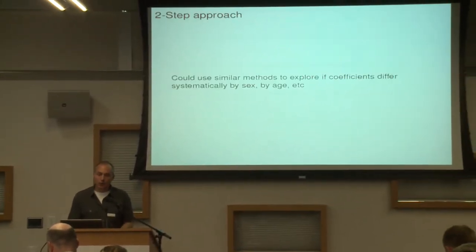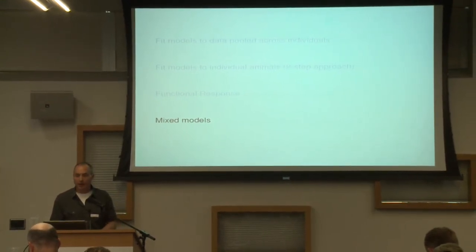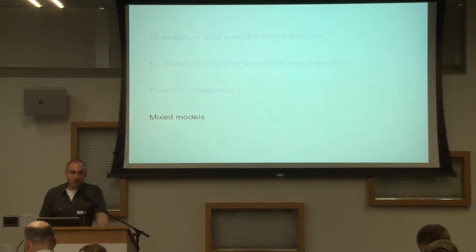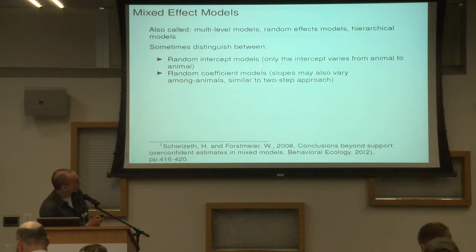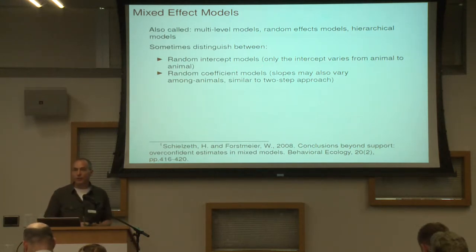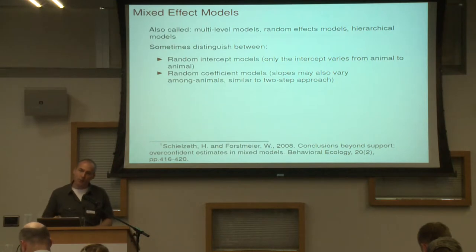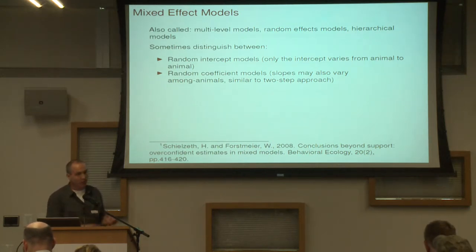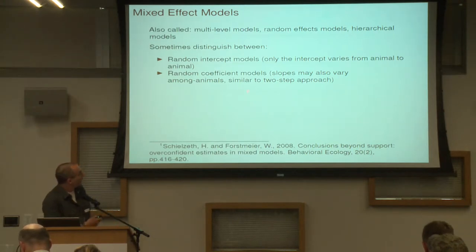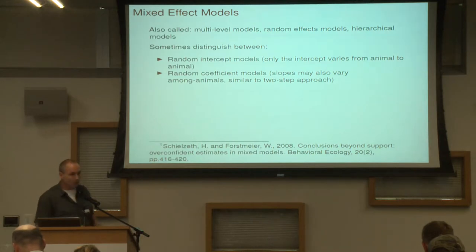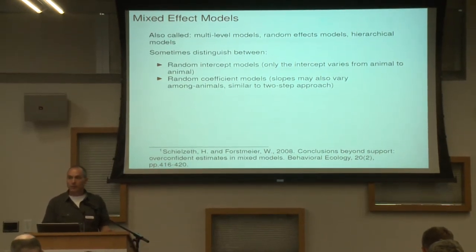The last part is mixed models. If you do this two-step approach, someone might say you should fit a mixed effect model. And if you look at the literature, there are tons of people fitting mixed effect models to study habitat selection. Most of them will fit what I would call just a random intercept only model — they say I have a random effect for individual. Essentially all that's doing is saying the intercepts are different for each individual, but all the effects of elevation, population density, and other covariates are assumed to be the same for each individual, which they probably aren't. So it'd be better to fit what I would call a random coefficient model, where each individual has its own regression coefficients.